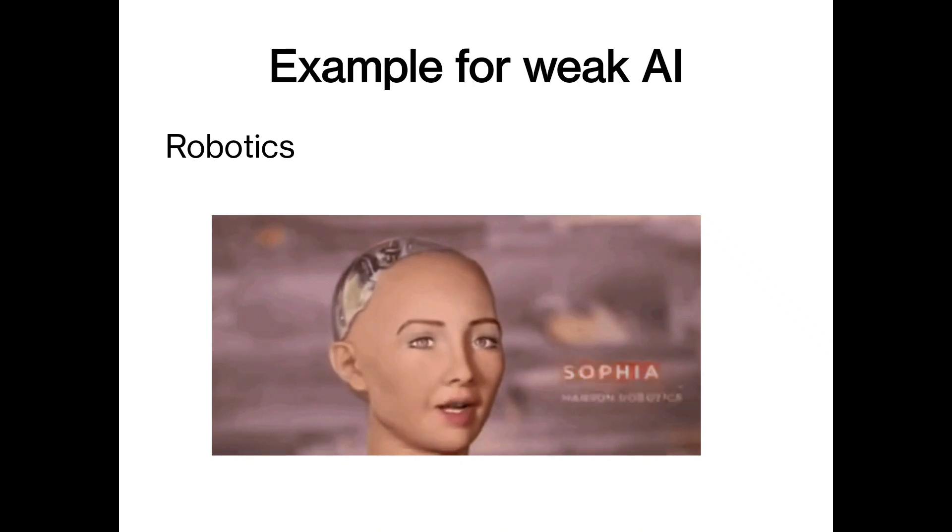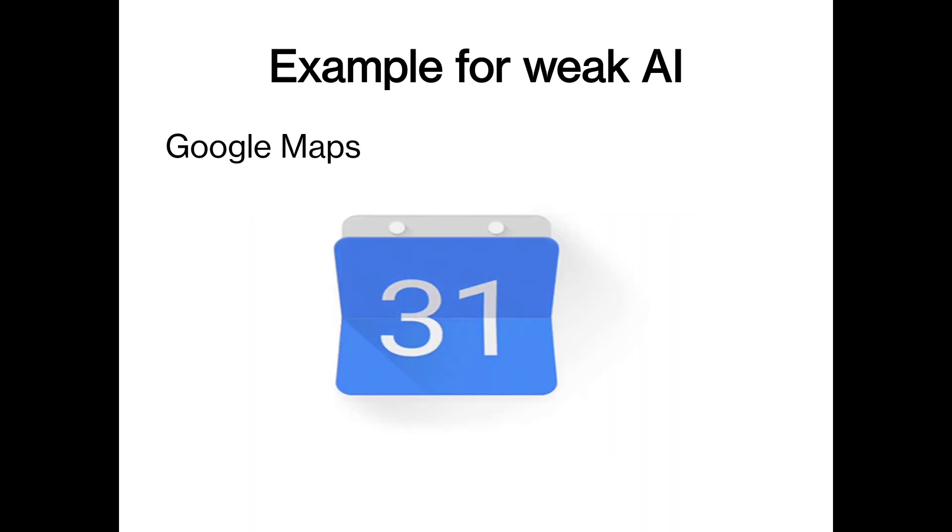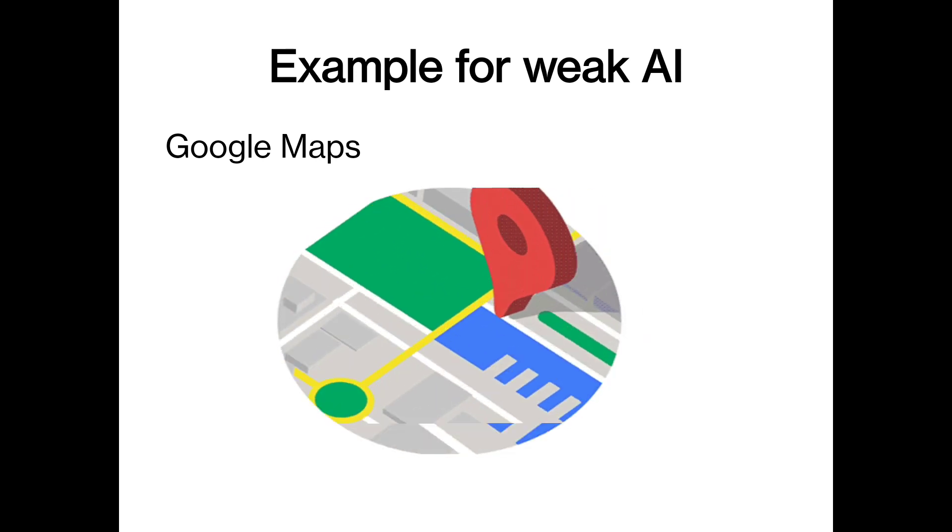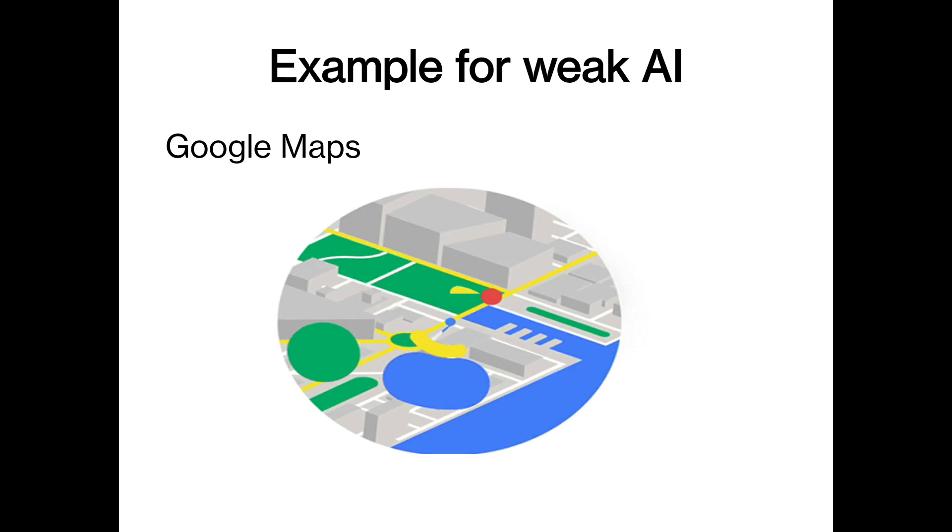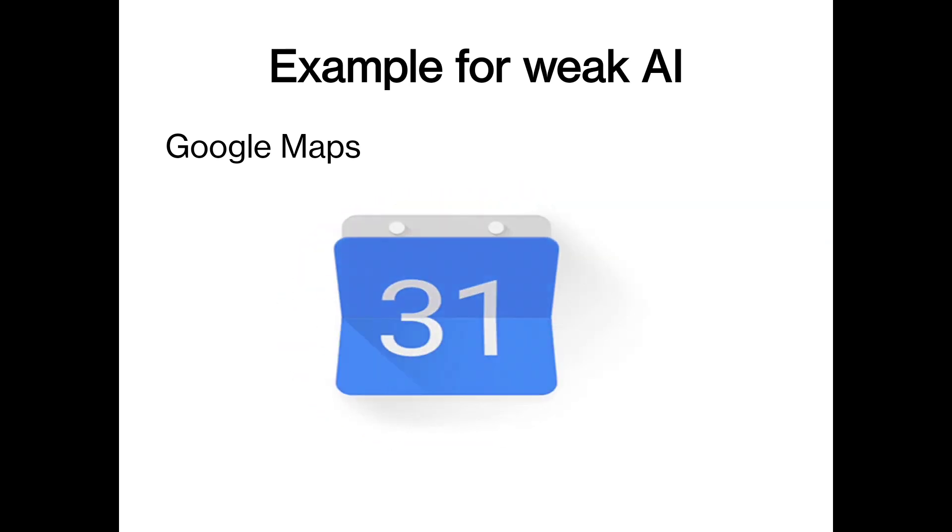Sophia robot is one of the applications of weak AI. Google Maps, we all are using the Google Maps to identify the location. These all are applications based on the weak or narrow AI.